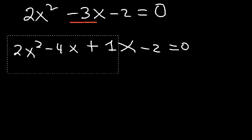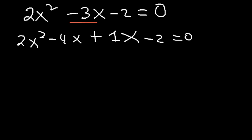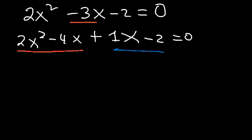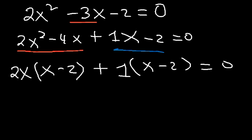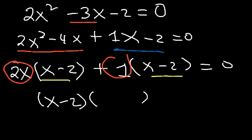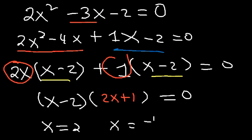When you have four terms, check if factoring by grouping works by looking at the ratio of the first two terms and the last two. Negative 4 divided by 2 is negative 2, and negative 2 divided by 1 is negative 2 — same ratio, so we can factor by grouping. Take out GCF 2x from the first two terms: 2x squared divided by 2x is x, and negative 4x divided by 2x is negative 2. For the last two terms, factor out 1, leaving x minus 2. The common factor is x minus 2, giving us x minus 2 times 2x plus 1. Therefore, x is equal to 2 and x is equal to negative 1 half.